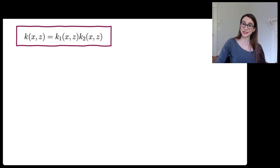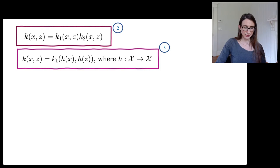Okay, so as it turns out, the product of two kernels is also a valid kernel. The third one is that if you take a kernel of a transformation of both X and Z, then that actually is a kernel.